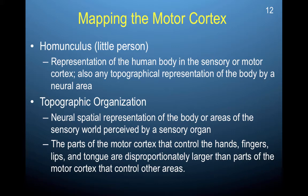Topographical organization is the neural spatial representation of the body or areas of the sensory world perceived by a sensory organ. The parts of the motor cortex that control the hands, fingers, lips, and tongue are disproportionately larger than the parts that control other areas. This topographical representation in the motor and sensory cortex is known as a homunculus.